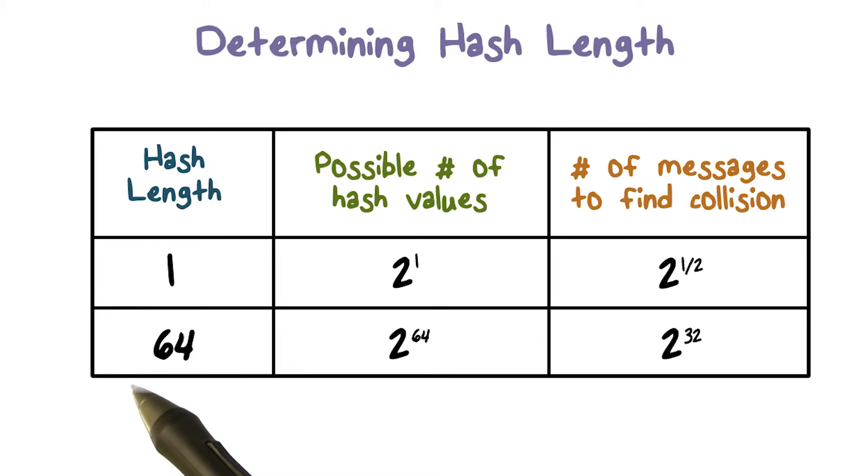If L is 64, which means the hash value has 64 bits, then there are 2 to the 64 possible hash values. This means the attacker only needs to search 2 to the 32 different messages to find a collision.